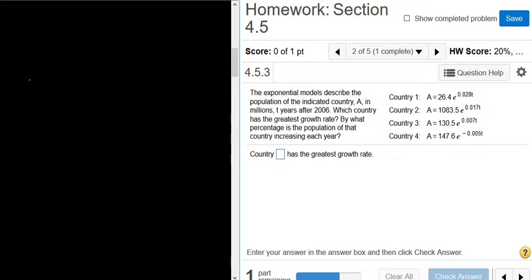So the idea is that there's a model, it's called the exponential model. And the formula, the general formula, is A equals A sub 0 times E to the kt.